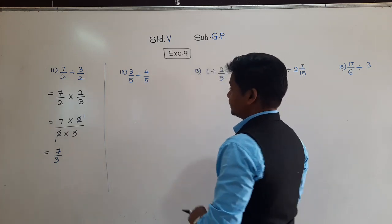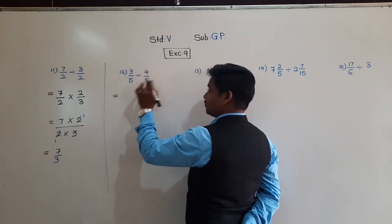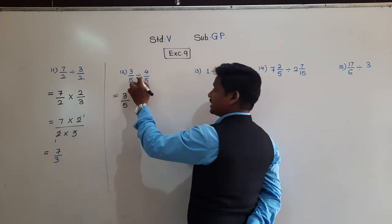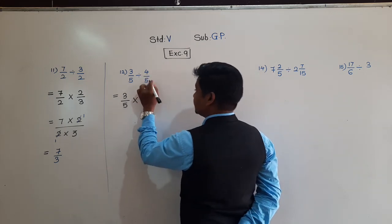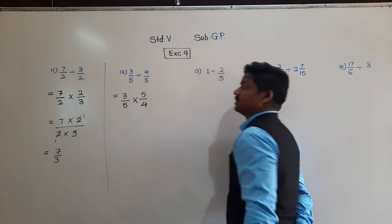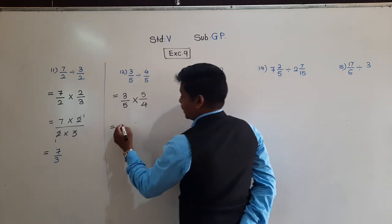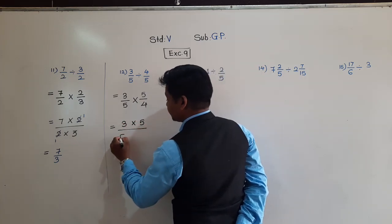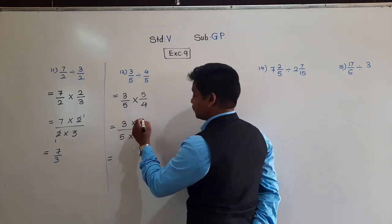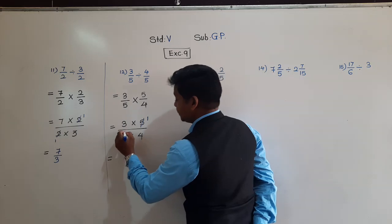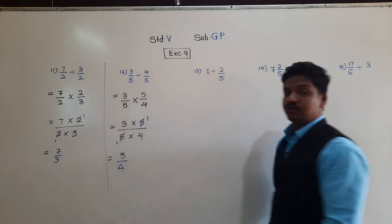Q12: 3/5 ÷ 4/5. Write the first fraction as it is: 3/5. Change division to multiplication and write the reciprocal of 4/5, which is 5/4. So: 3/5 × 5/4. Check: numerator 5 and denominator 5 are in the table of 5 — divide both by 5 to get 1 each. Multiply: 3 × 1 = 3 and 4 × 1 = 4. Answer: 3/4.